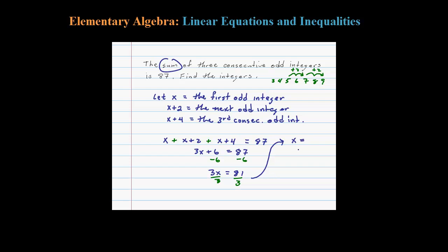So X equals 81 divided by three is 27. So if the first odd integer is 27, well the next one's going to be 27 plus 2 or 29, and the next one after that would be 31. And you can actually check your answers. Notice that all these do add up to 87.